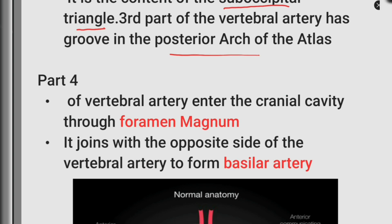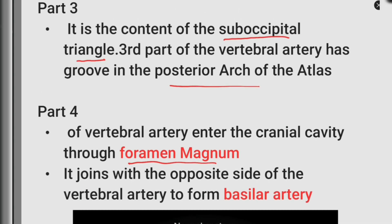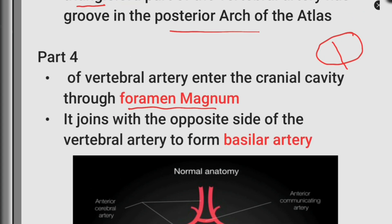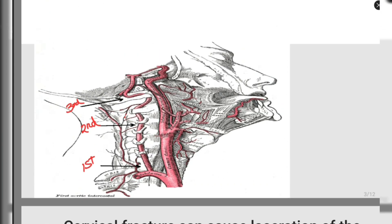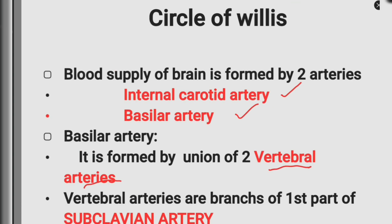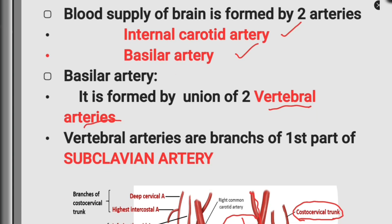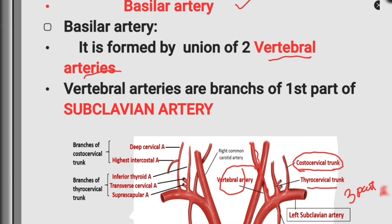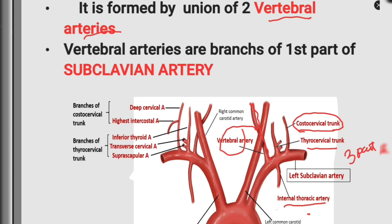Part four of the vertebral artery enters the cranial cavity through the foramen magnum. It then joins with the opposite vertebral artery — one from each side — to form the basilar artery. This is part four of the vertebral artery.